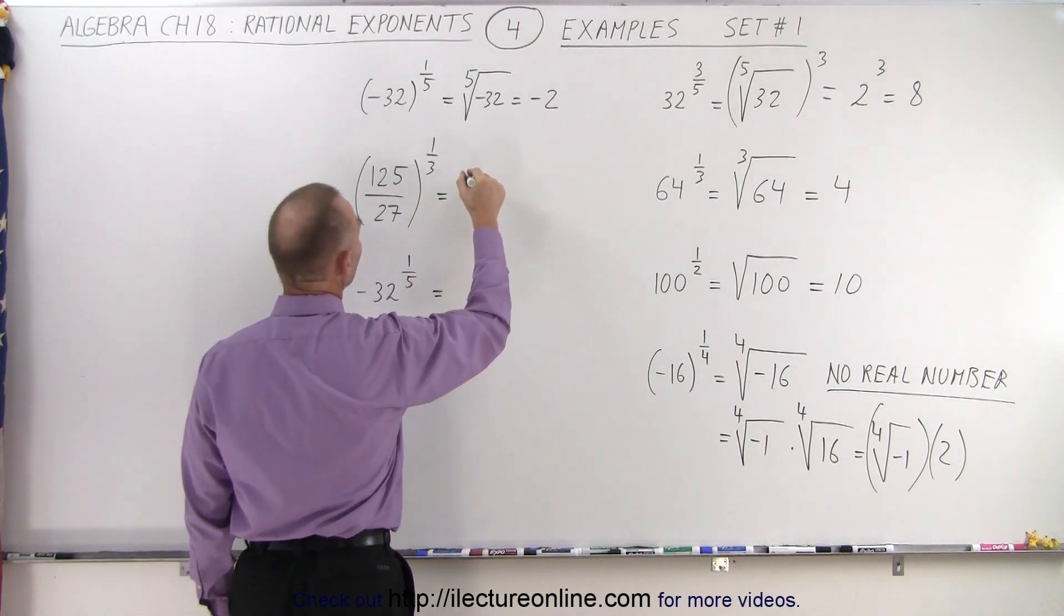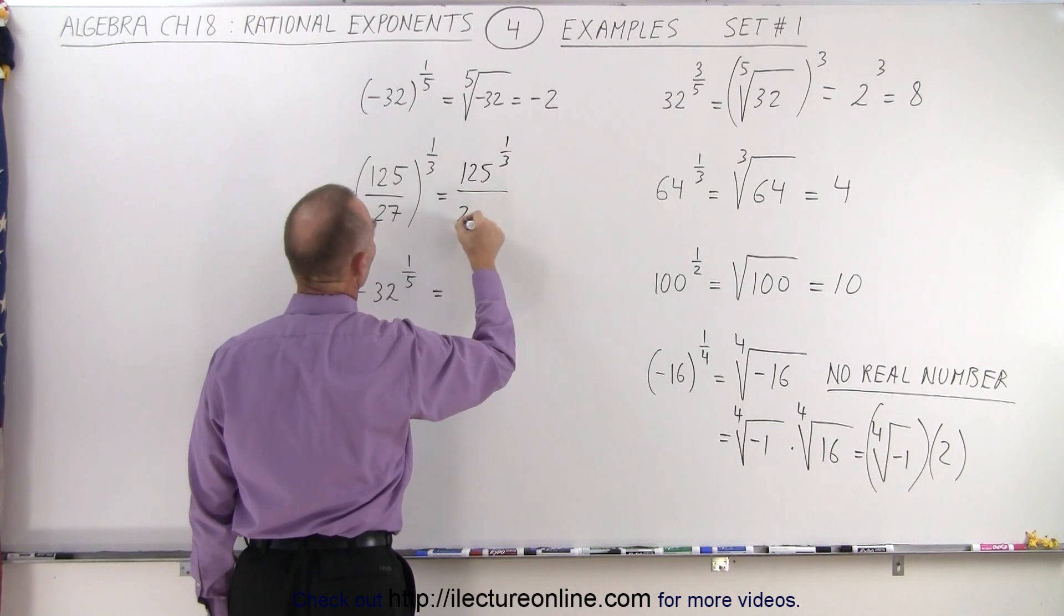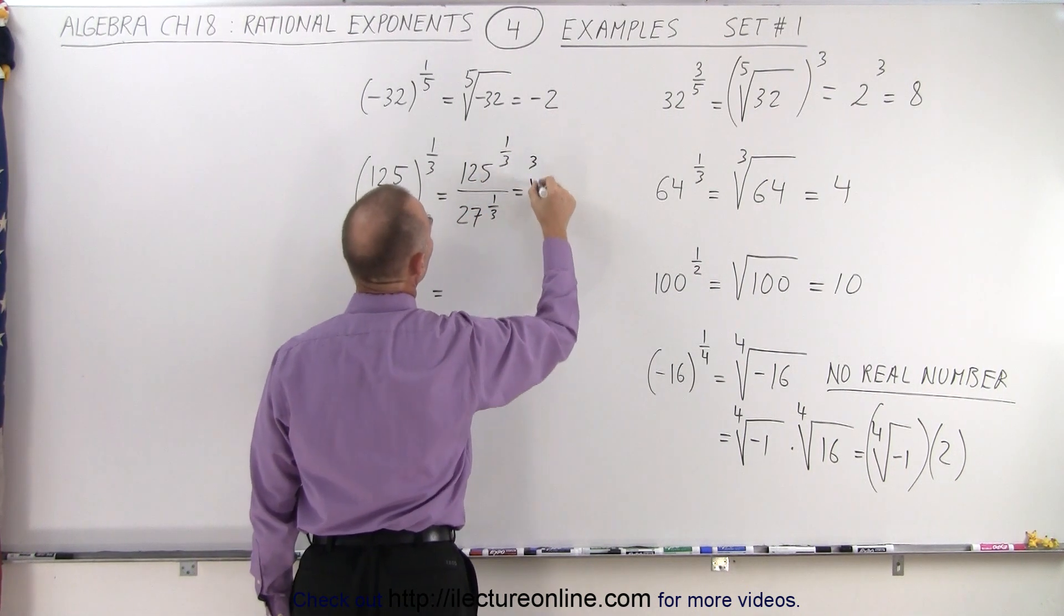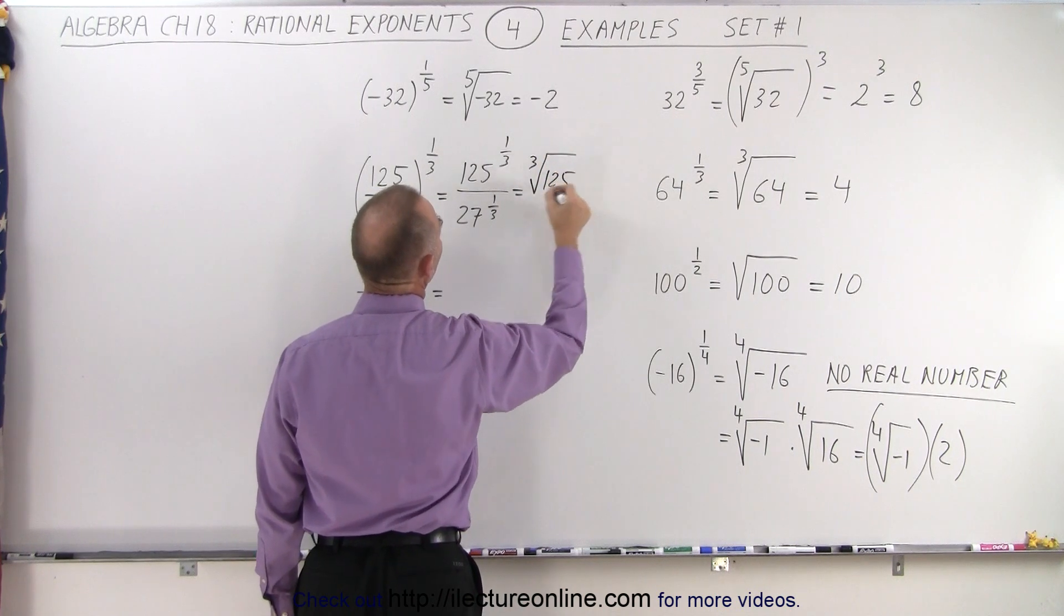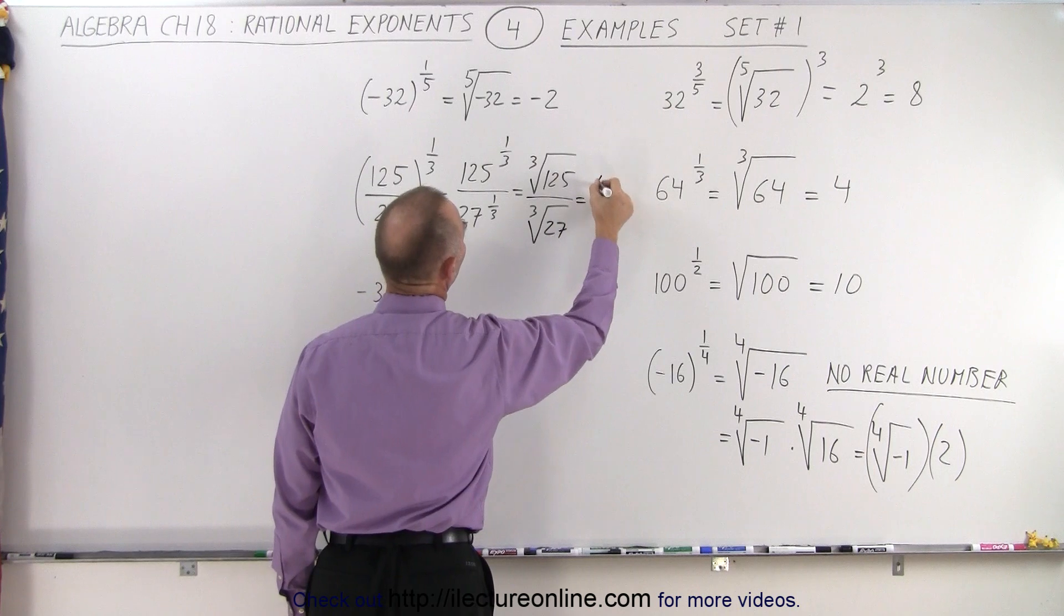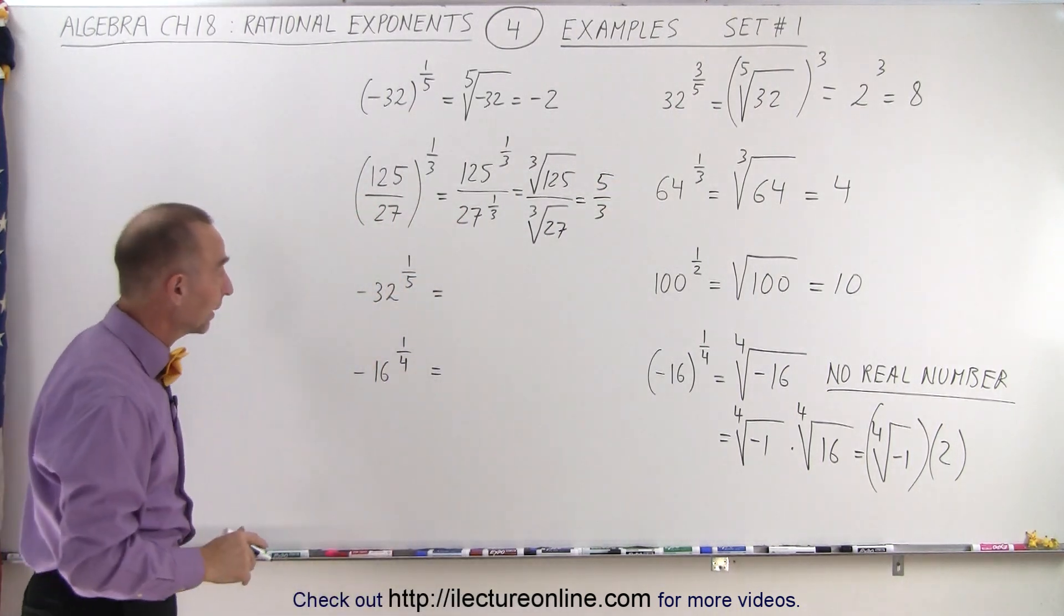In this case, we can write this as 125 to the 1/3rd power, divided by 27 to the 1/3rd power, which is equal to the cube root of 125, divided by the cube root of 27, which is equal to 5 over 3. So that is how we solve a problem like that.